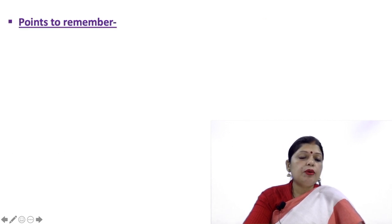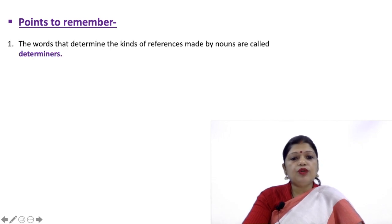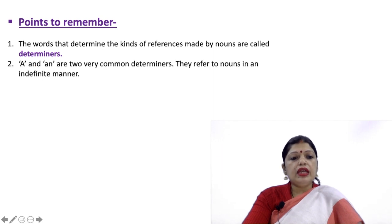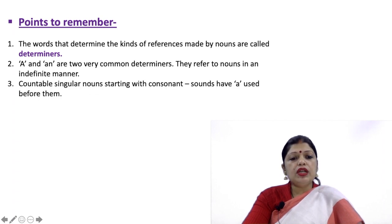Some points to remember children. The words that determine the kinds of references made by nouns are called determiners. A and An are two very common determiners. They refer to nouns in an indefinite manner. Countable singular nouns starting with consonant sounds have A used before them.